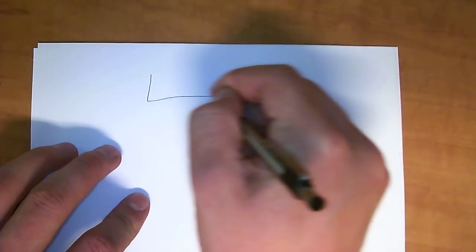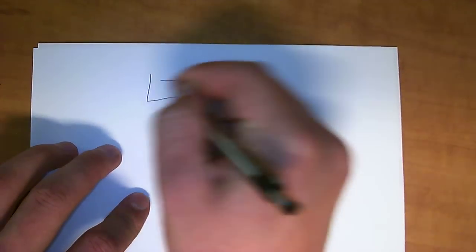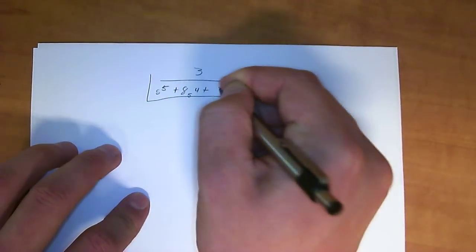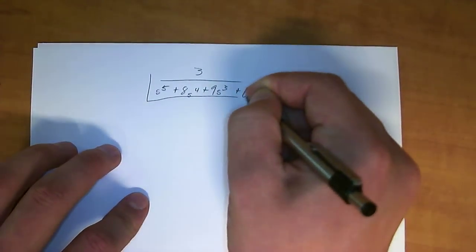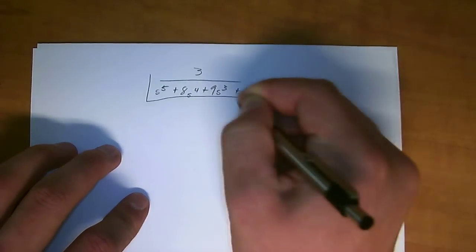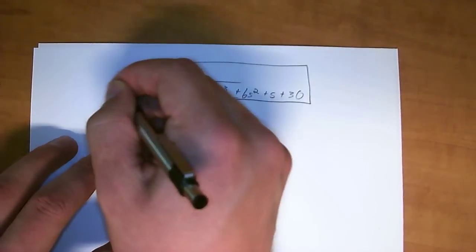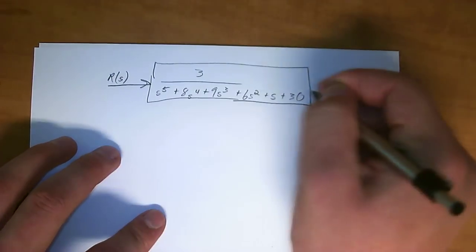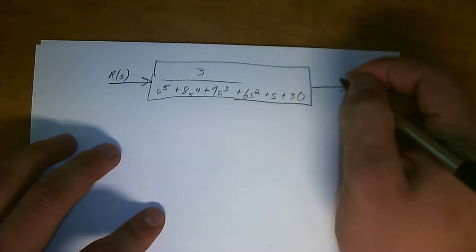Hey everybody, welcome to controls. Got another problem here of turning a transfer function into a state-based representation. So here's our transfer function. It's going to be 30 over s to the 5th plus 8s to the 4th plus 9s to the 3rd plus 6s squared plus s plus 30. I'm going to put it in a block here. The input is R of s and the output is C of s.